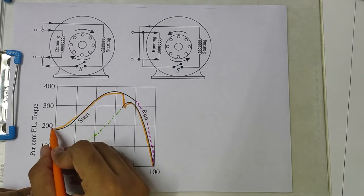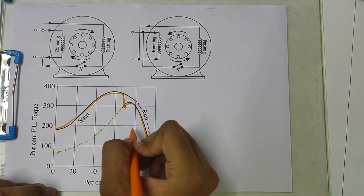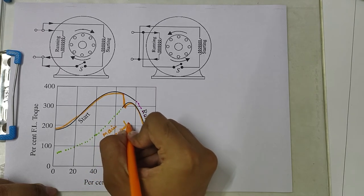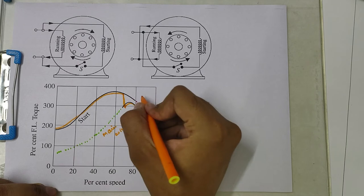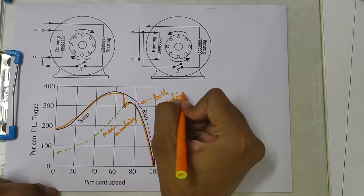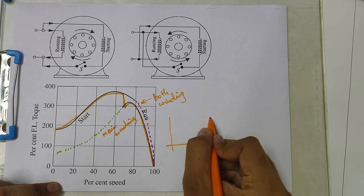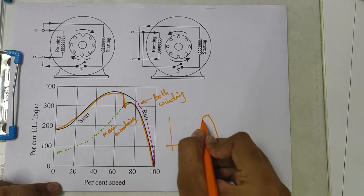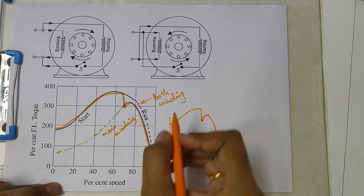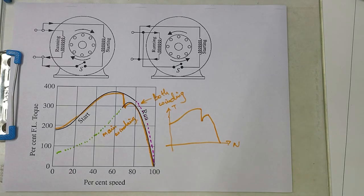So during starting we have some torque, and after the switch has opened there is only one winding. So this curve is with only the main winding, and this curve is for resultant of both winding. So the actual curve as a combination of both this winding will be something like this. This is the torque speed curve of split phase induction motor.